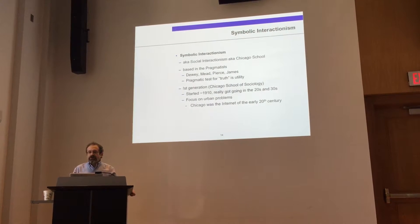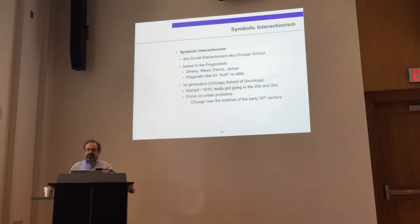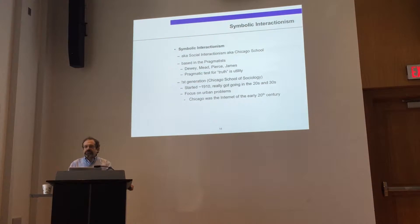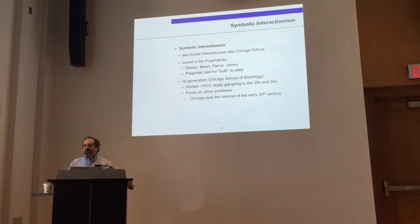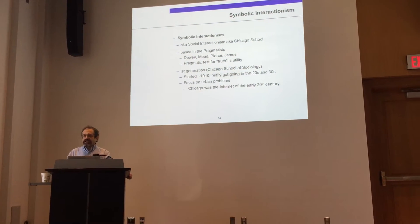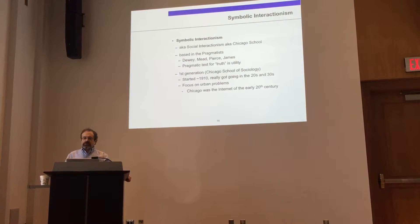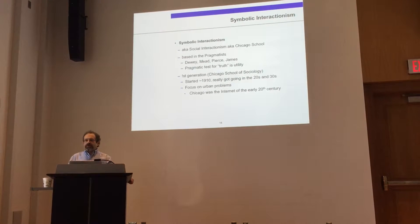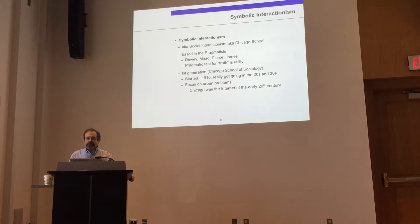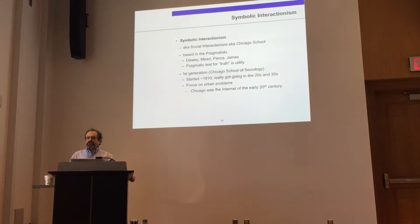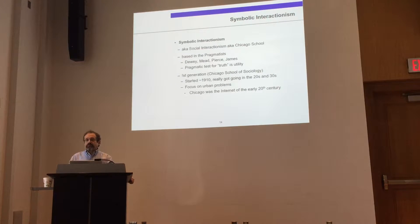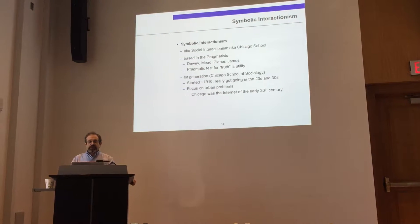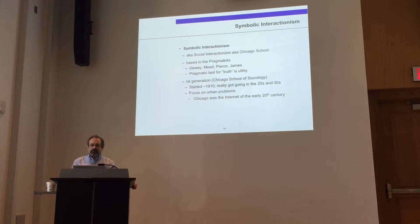The first generation, usually called the Chicago School, started around 1910. The University of Chicago was the first sociology department in the United States. It really got going in the 20s and 30s with a focus on urban problems. Chicago was an amazing living laboratory at the time — all these immigrants, Slavs, Norwegians, and all kinds of people were trying to assimilate into the city. It was a massive industrial place at the early part of the 20th century. The first Chicago School was really interested in what's going on here — it was a whole new way of looking at what people are doing — and they invented a lot of methods we still use.